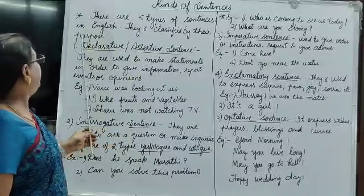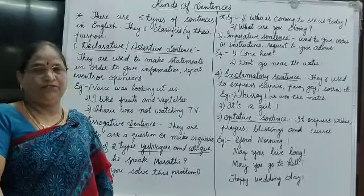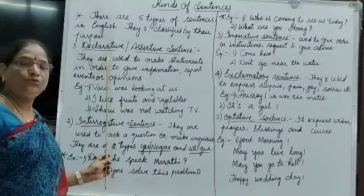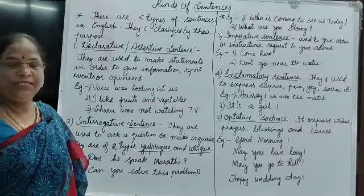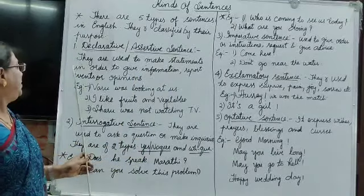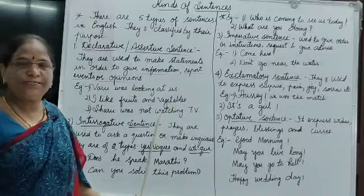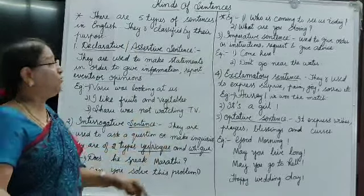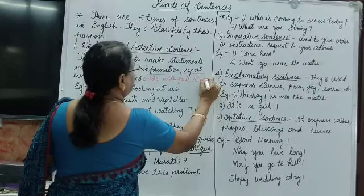There are five types of sentences in English, classified by their purpose. The first one is declarative, also known as assertive sentence. As mentioned, it is used to express ideas and opinions. The definition: they are used to make statements in order to give information, report events, or express an opinion. This sentence ends with a full stop.